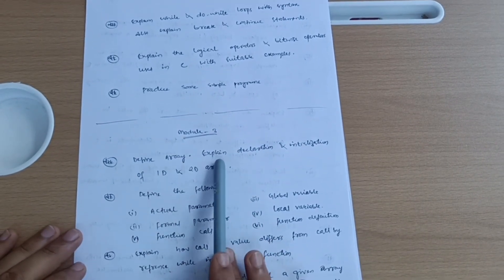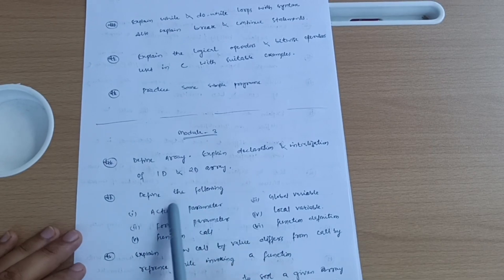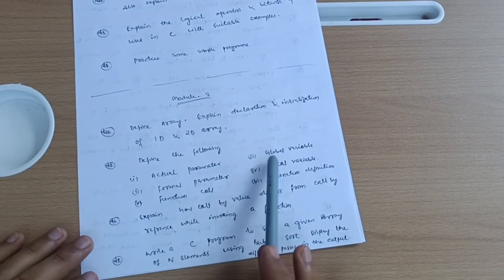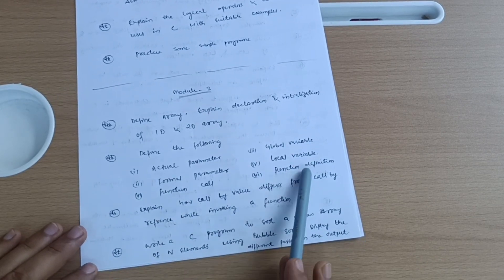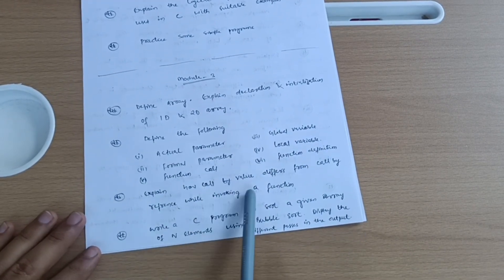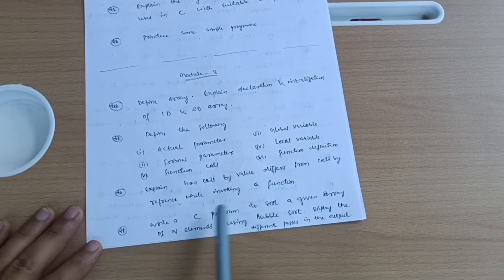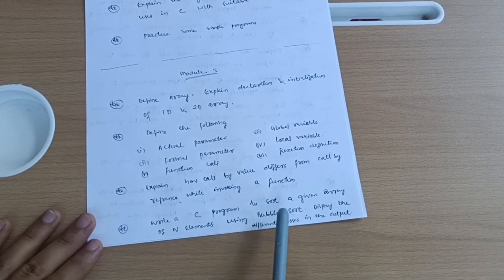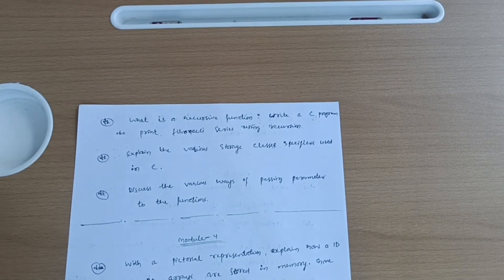Next is module third. Define array. Explain declaration and initialization of 1D and 2D array. Define the following: actual parameter, formal parameter, global variable and local variable, function call and function definition. Explain how call by value differs from call by reference while invoking a function. Write a C program to sort a given array of n elements using bubble sort. Display the definite passes in the output.